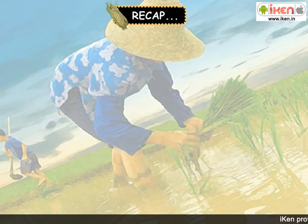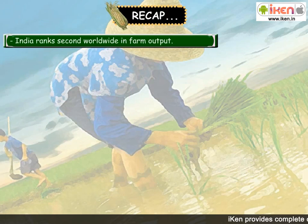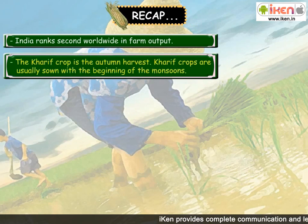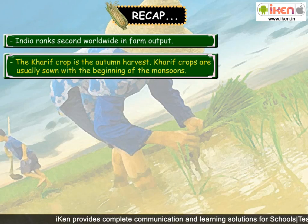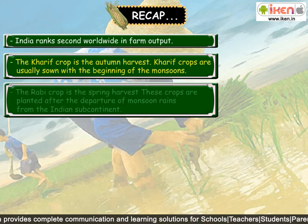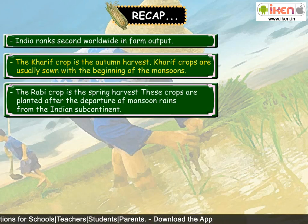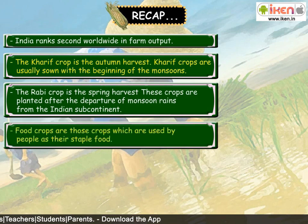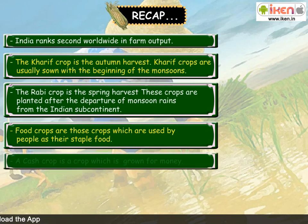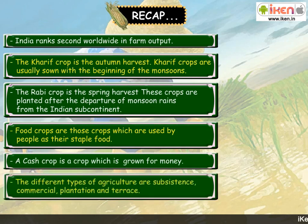Quick recap: India ranks second worldwide in farm output. The Kharif crop is the autumn harvest; Kharif crops are usually sown with the beginning of the monsoons. The Rabi crop is the spring harvest; these crops are planted after the departure of monsoon rains from the Indian subcontinent. Food crops are those used by people as their staple food. A cash crop is a crop grown for money. The different types of agriculture are subsistence, commercial, plantation and terrace.